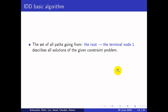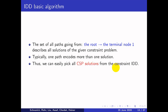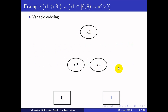The IDD basic algorithm works as follows: the set of all paths going from the root node to the terminal node 1 describes all solutions of the given constraint problem. Typically, one path encodes more than one solution. Thus, we can easily pick all CSP solutions from the constraint IDD. For example, given the Boolean expression X1 ≥ 8, or X1 in some interval and X2 > 0, we start by ordering the variables, choosing to start with X1 then X2.